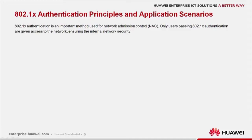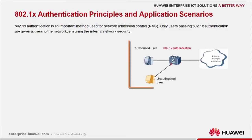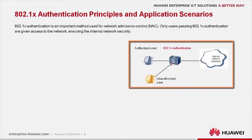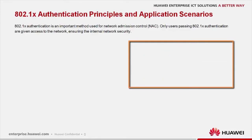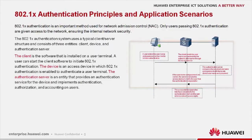Only users passing .1x authentication are given access to the network, ensuring internal network security. The .1x authentication system uses a typical client-server structure and consists of three entities: client, device, and authentication server.